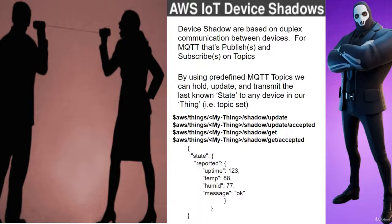The best way to handle abstract concepts is to practice with them. So after this initial lecture, I'm going to go through several examples of using Shadow State and Shadow State topics to show you exactly how they work in this publish-subscribe model using the MQTT protocol. After I do that, I think you're going to really understand better how to use Device Shadows.